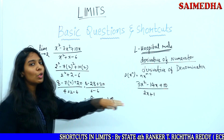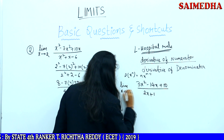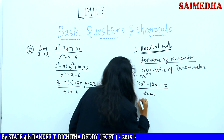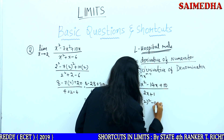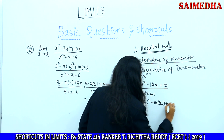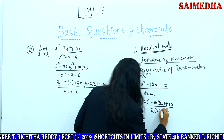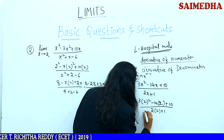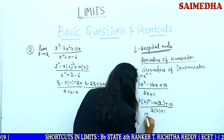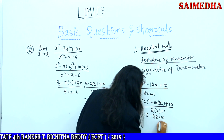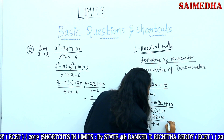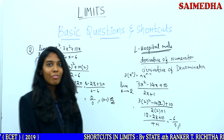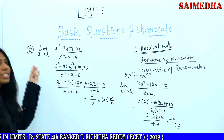Now apply the same limit to this. Limit x tends to 2. Again substitute 2 in the place of x: 3 into 2 squared minus 14 into 2 plus 10, by 2 into 2 plus 1. 3 into 4 equals 12, minus 28 plus 10, by 4 plus 1, which equals minus 6 by 5. So minus 6 by 5 is the determined form — minus 6 by 5 is the solution to this question.